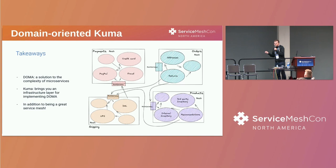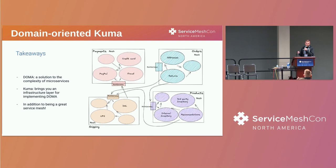So that's domain-oriented Kuma in short. The takeaways are: DOMA is a good way to avoid some of the complexity of microservices and avoid some of the pitfalls. And Kuma is a great service mesh that provides an infrastructure layer implementing the DOMA architecture. Thank you.